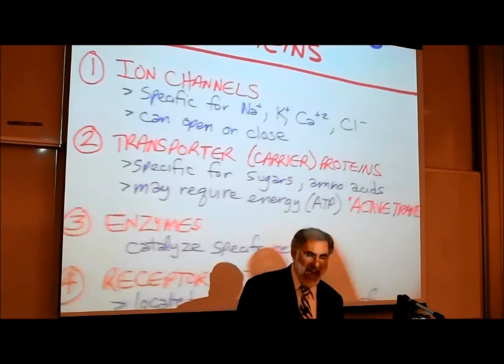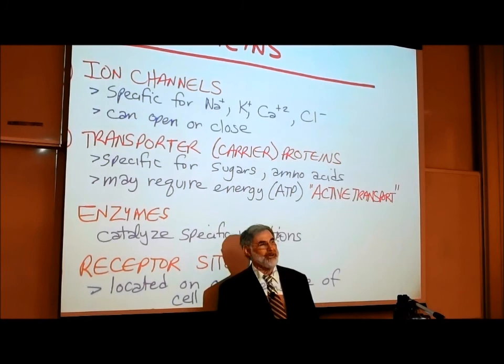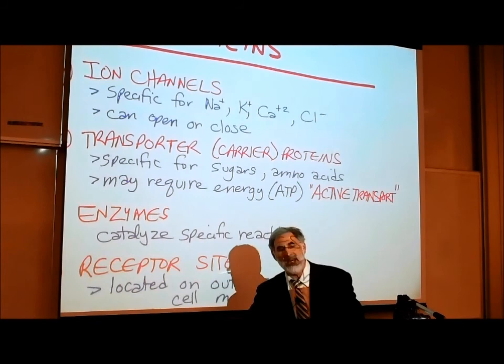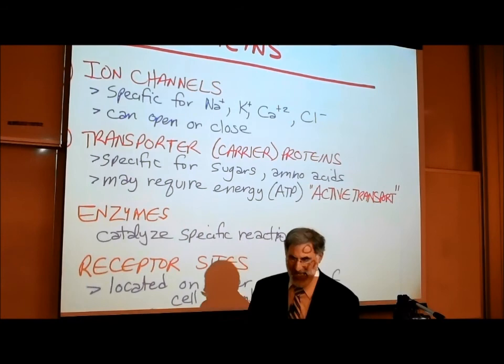For example, in order for transporter proteins to transport amino acids into the cell, they require ATP — that's called active transport. Interestingly, the transporter proteins that transport sugars into the cell do not require ATP.